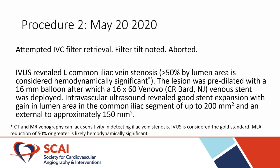IVUS revealed a left common iliac vein stenosis. The lesion was predilated with a 16mm balloon, after which a 16x60 Venovo venous stent was deployed and post-dilated with the same balloon. Intravascular ultrasound revealed good stent expansion with a gain in lumen area of up to 200mm² in the common iliac segment and 150mm² within the external iliac vein.